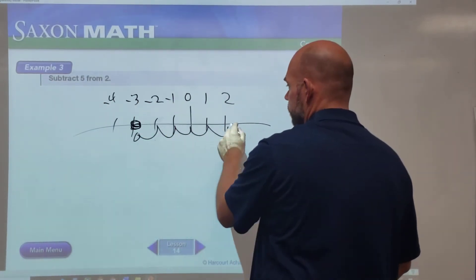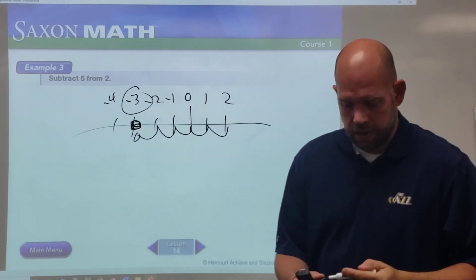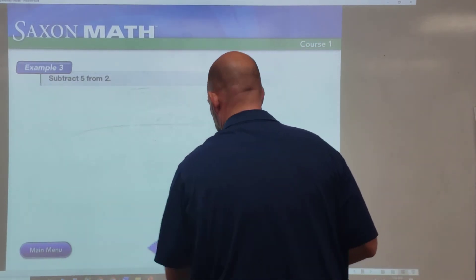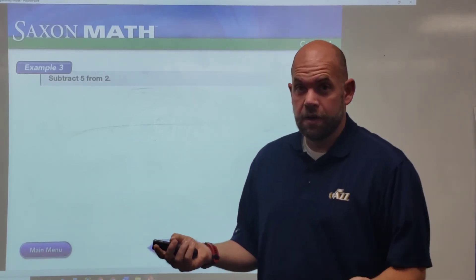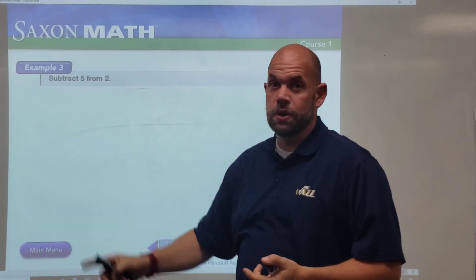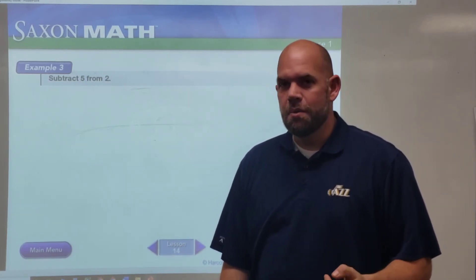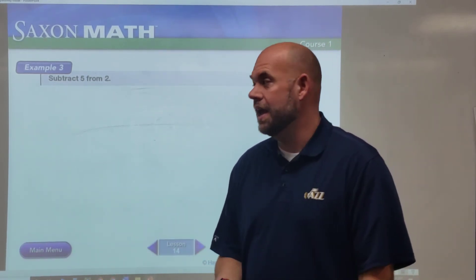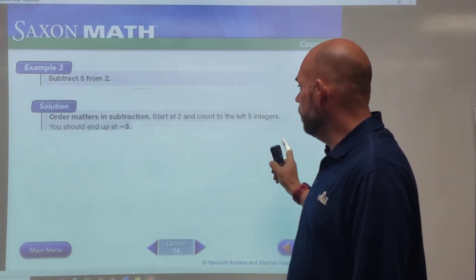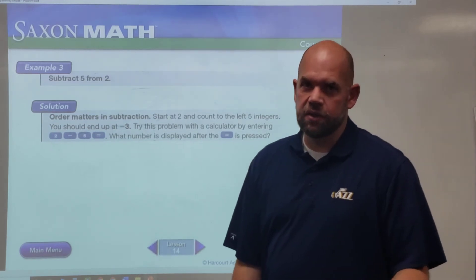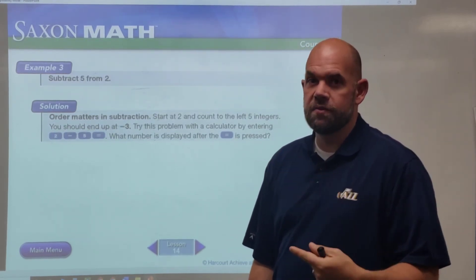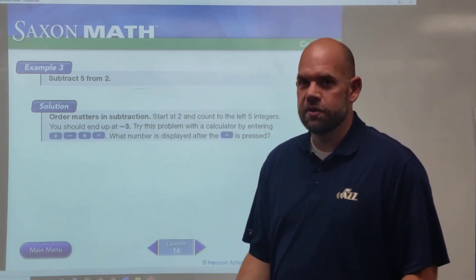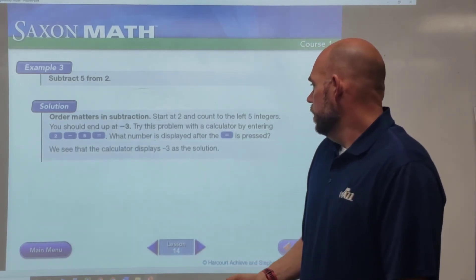Subtracting five from two gets us to negative three — so you can't just default to the answer three. This time it's going to be negative. There is a pattern: you can subtract the smaller from the larger and put a negative in front of the result. But if you can't picture that number line in your head, sometimes you'll forget the negative. So start at two, count left five steps, and you end up at negative three. After school you'll often use a calculator for these calculations, and calculators don't mess up.